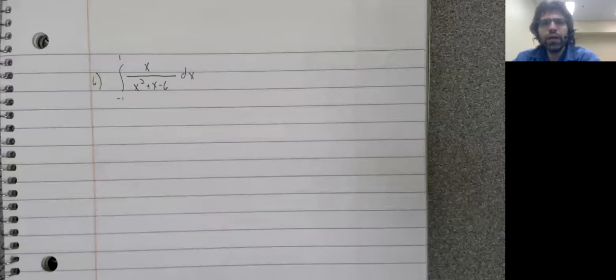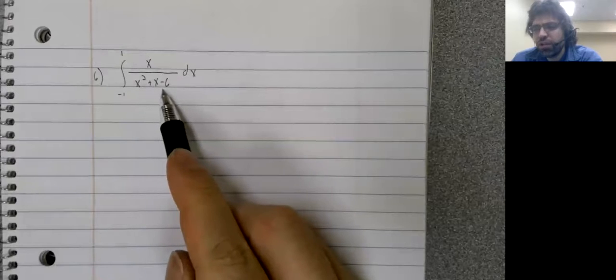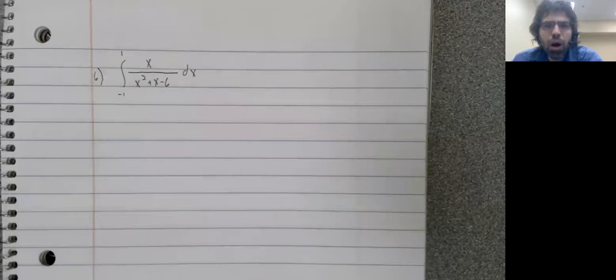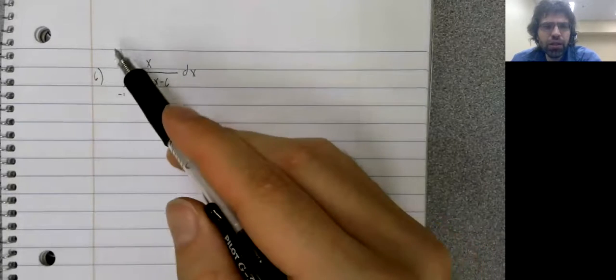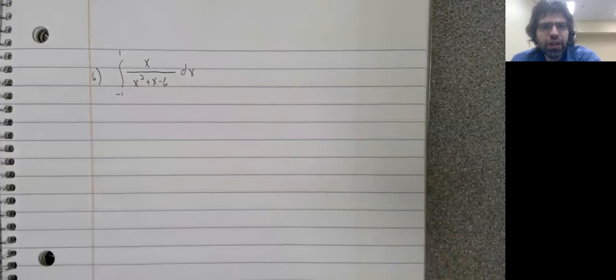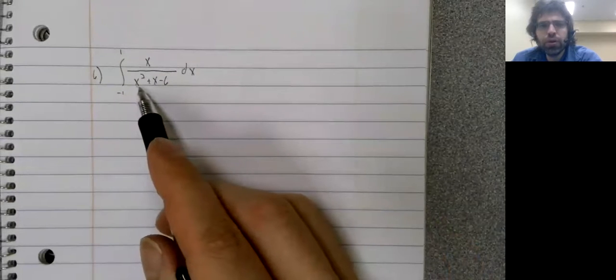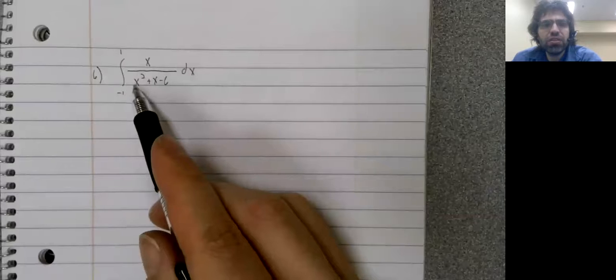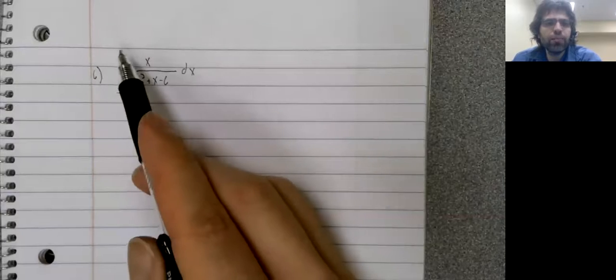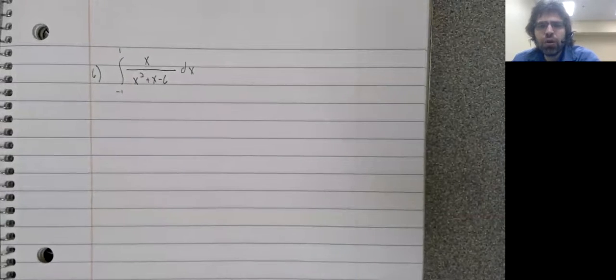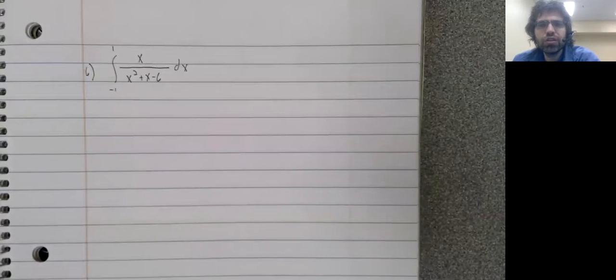Six requires a bit of caution. It's a definite integral. It's got division. This could be improper. It could have a vertical asymptote between negative one and one. If you graph this quadratic on your calculator, or use the quadratic formula, you'll see that it doesn't. This quadratic is not zero between negative one and one. So there are no vertical asymptotes, and the improper integral stuff doesn't apply.